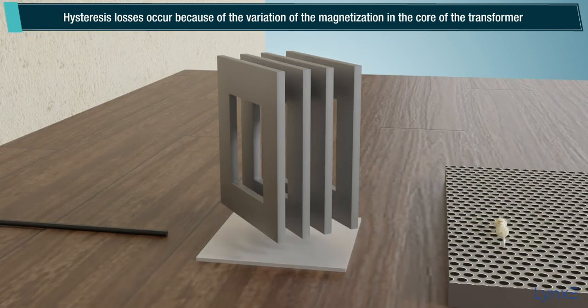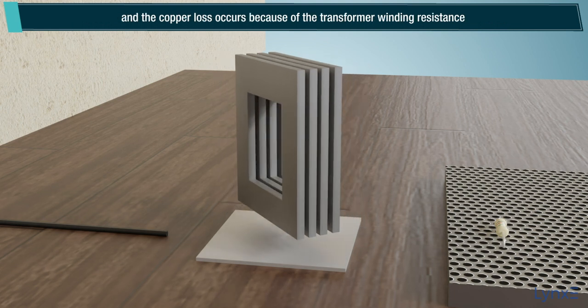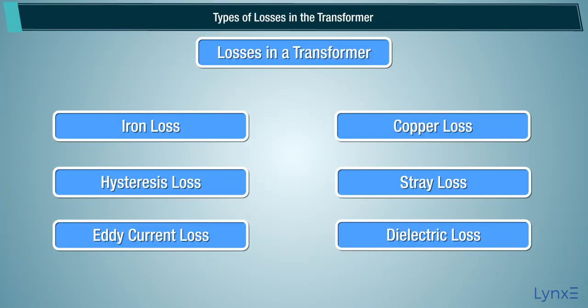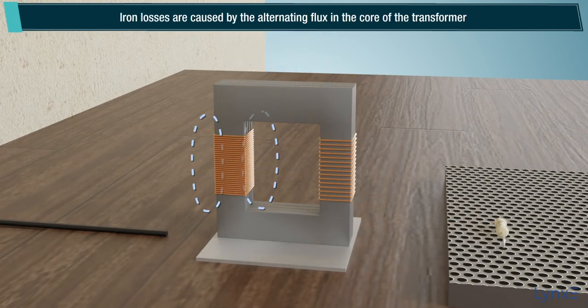Hysteresis losses occur because of the variation of the magnetization in the core of the transformer, and the copper loss occurs because of the transformer winding resistance.